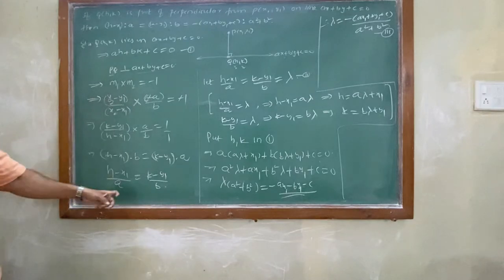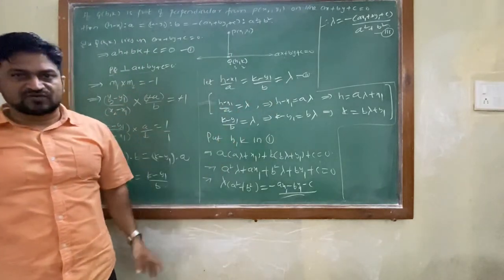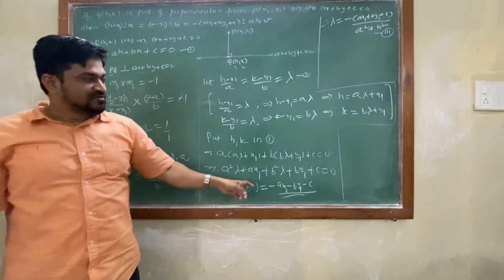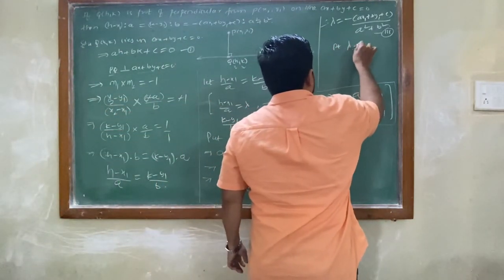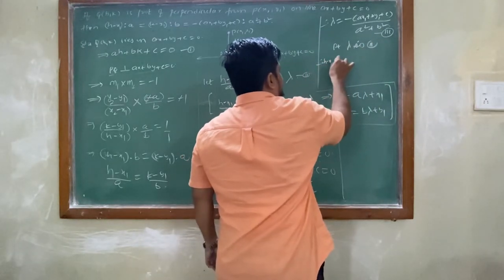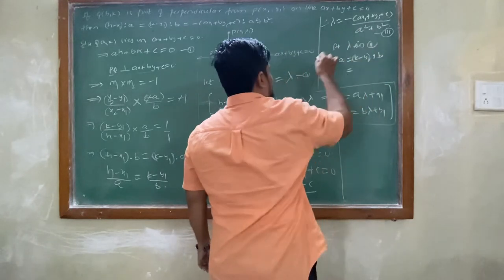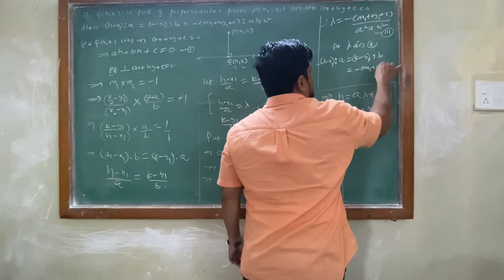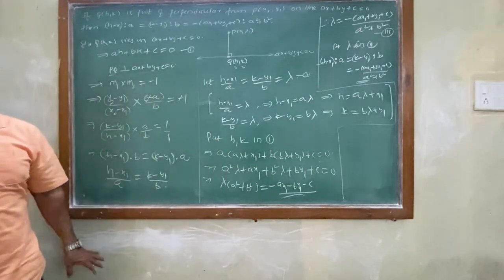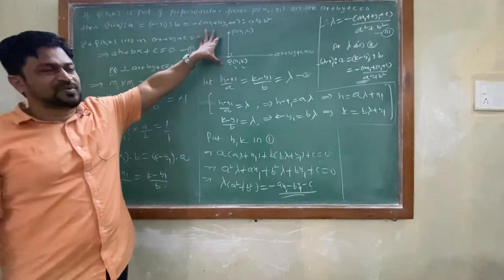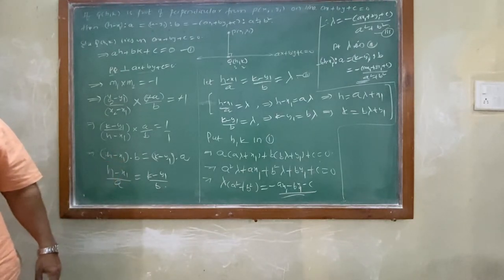Once we got λ, substitute it back. We had: product of slopes equals -1, equated first and second terms to λ, got values of h and k, substituted in the first equation to get λ. Now put λ into the second equation: (h-x1)/a = (k-y1)/b = -(ax1+by1+c)/(a²+b²). This is the foot of perpendicular theorem.